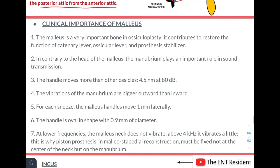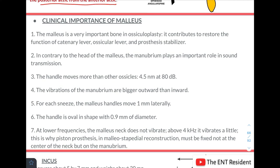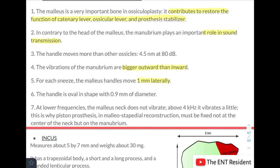The malleus is very important in ossiculoplasty, contributing to restore the function of catenary lever, ossicular lever, and prosthesis stabilizer. The handle of the malleus plays a very important role in sound transmission — it actually moves more than all the other ossicles, and the vibrations are bigger outward than inward. For each sneeze, the malleus handle moves about 1 mm laterally. At lower frequencies the malleus neck does not vibrate above 4 kHz. This is why piston prosthesis and malleus-based reconstruction must be fixed not at the centre of the neck but on the manubrium.